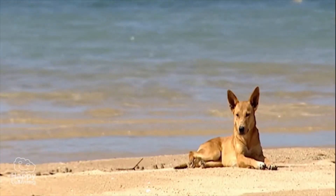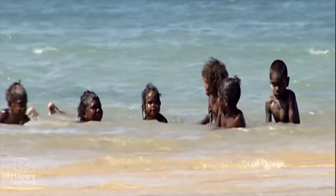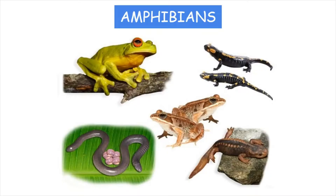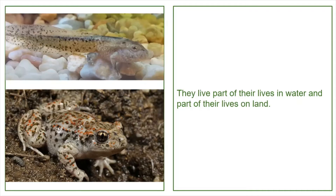Amphibians. Amphibians live near water or in damp places. They live part of their lives in water and part of their lives on land.